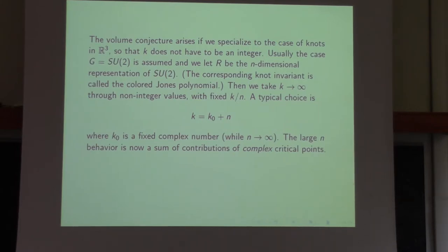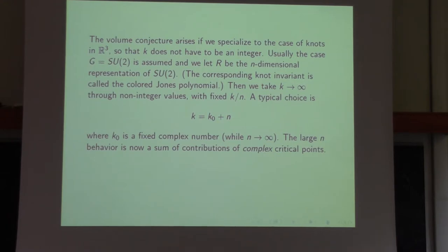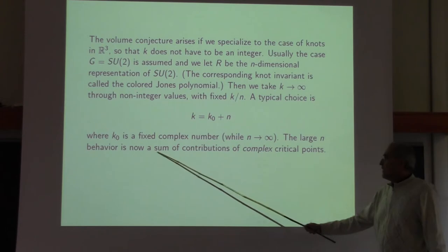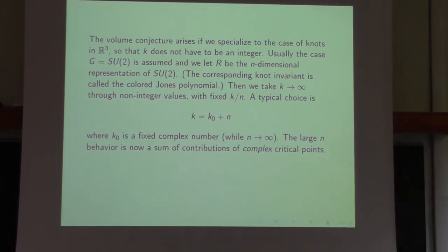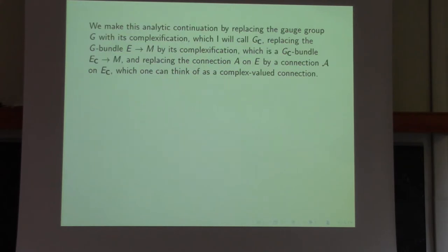The large-n limit is now a sum of contributions from complex critical points. By complex critical points, I mean the critical points of the analytic continuation of the Chern-Simons function of A. Analytic continuation means we take real variables and turn them into complex variables. We replace the gauge group with its complexification — for example if G is SU(2), the complexification is SL(2,C). We replace the real connection A by a complex connection, and the analytic continuation of the Chern-Simons function is given by the same formula but with complex variables.